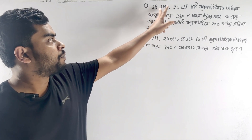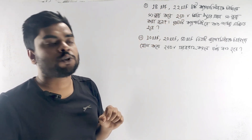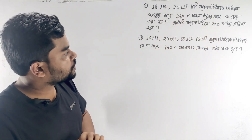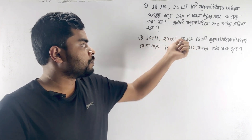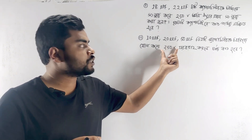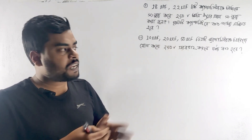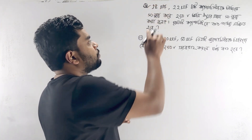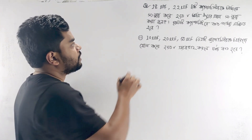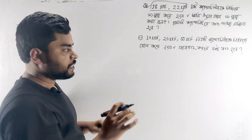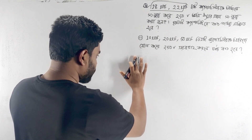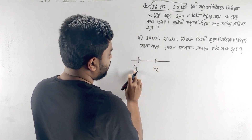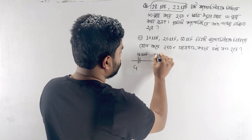As you can see, first of all, we have an 8 microfarad or 22 microfarad capacitor. The capacity-related rate is created. Therefore, the capacity of 25V will continue. Let me write this down. A is a capacitor — C1 capacitor and C2 capacitor. C1 is 18µF and C2 is 22µF.